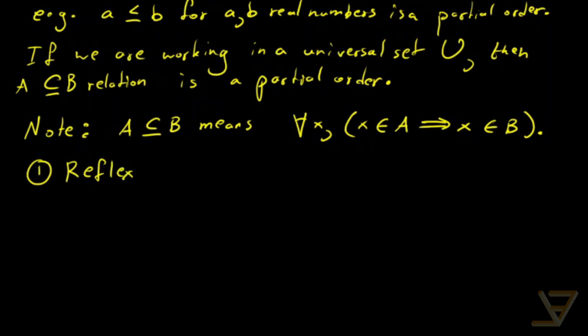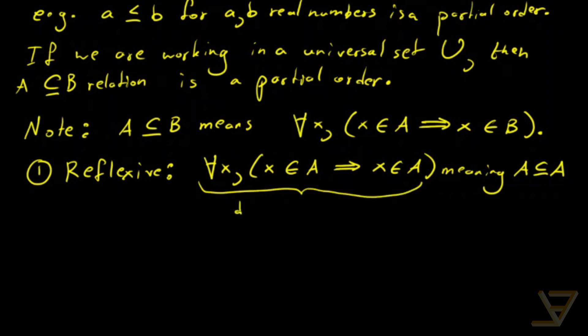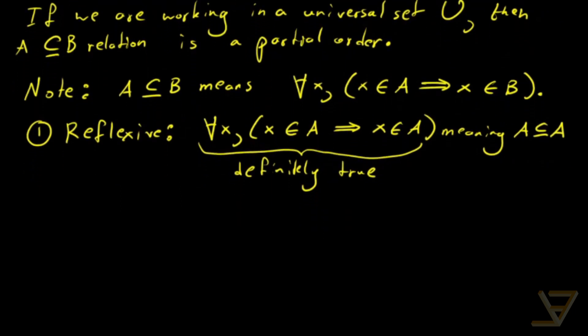So let's prove that the subset relation is a partial order. We want to prove, first of all, reflexivity, and we want to show that for all x, x is in A implies x is in A. Because that would mean A is a subset of A, and this is definitely true. Because a proposition must imply itself. It's a tautology.